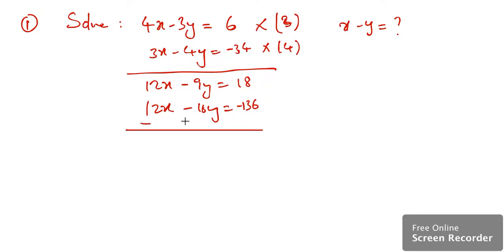So negative makes it positive, this goes out plus 16, minus minus gives positive 7y, and this is going to give you 154. So y is nothing but 154 over 7, y value is going to be 22.